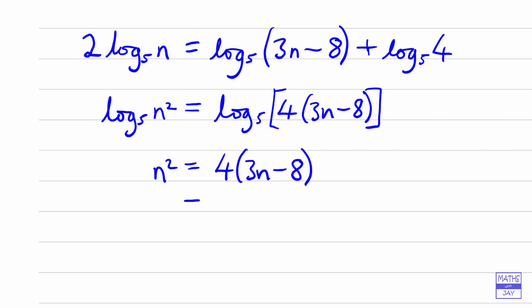So let's multiply out the right hand side. So 4 times 3n is 12n, 4 times 8 is 32. And then bringing everything over to the left hand side, we've got n squared minus 12n plus 32 equals 0.